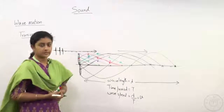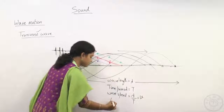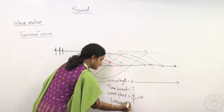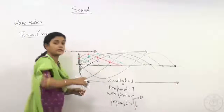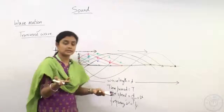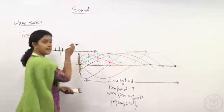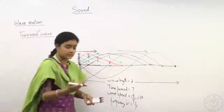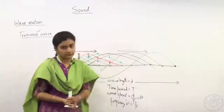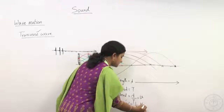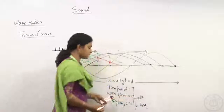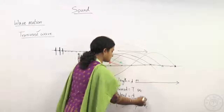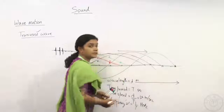Frequency, denoted by nu (ν), is given as 1/T — the number of vibrations a particle makes in one second. It is measured in hertz. Time period is in seconds, wavelength in meters, and wave speed in meters per second.